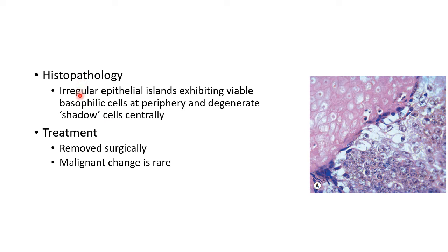Coming to the histopathology of pilomatricoma, histopathology shows irregular epithelial islands exhibiting viable basophilic cells at the periphery, as you can see in this picture, and there will be degenerate shadow cells centrally, as you can see in this picture.